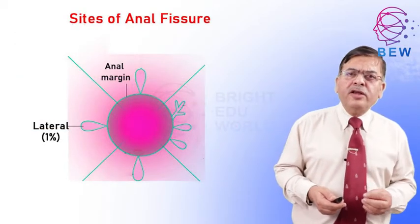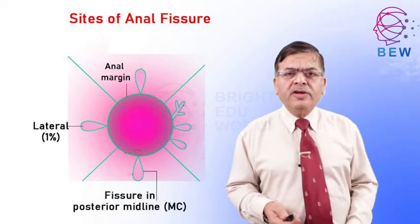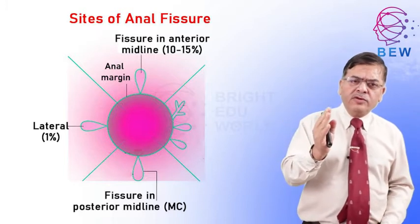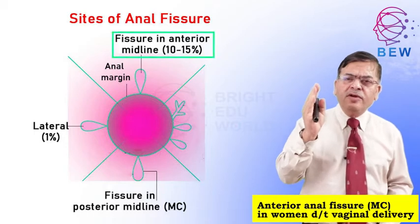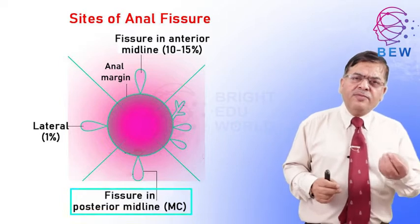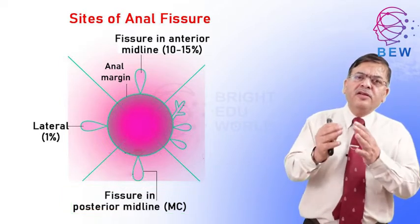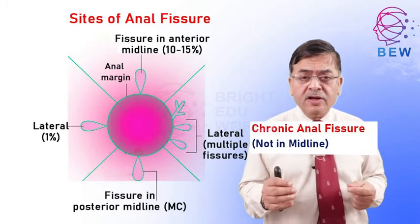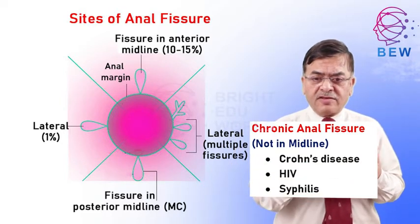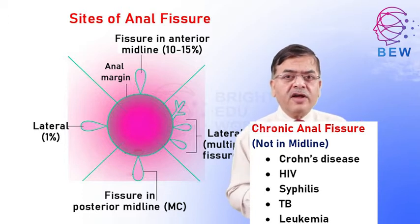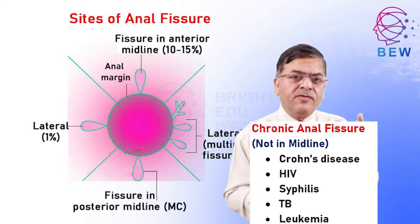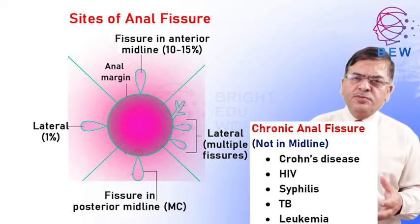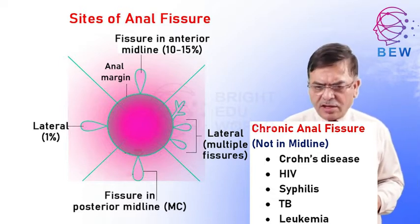Fissures are most commonly located in the posterior midline. About 10 to 15 percent are located in the anterior midline, more so in female patients. In one percent of patients, the fissure is found at positions other than these two common locations. If you find a fissure in an uncommon position, you should look for other causes like Crohn's disease, HIV, syphilis, tuberculosis, or leukemia — conditions that may produce multiple fissures or fissures in atypical positions.